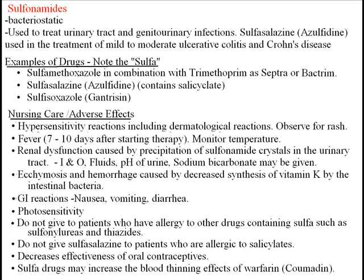Use these drugs with caution in patients with renal dysfunction, as sulfonamides are excreted via the kidneys. Ecchymosis and hemorrhage are caused by decreased synthesis of vitamin K. Since vitamin K is made in the intestines by intestinal bacteria, which are susceptible to sulfonamides, a decrease in intestinal bacteria leads to decreased vitamin K and thus an increased risk of bruising and clotting dysfunction.